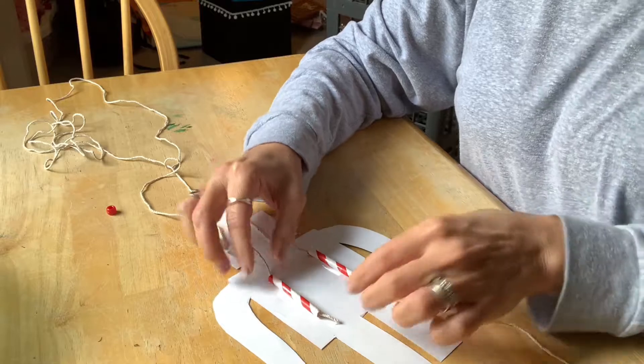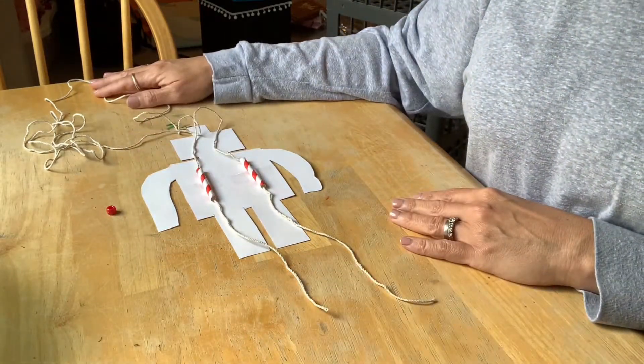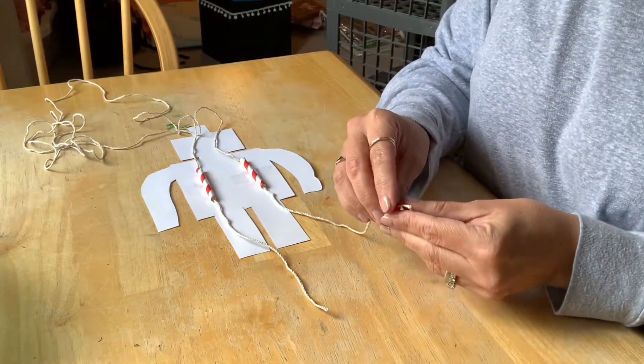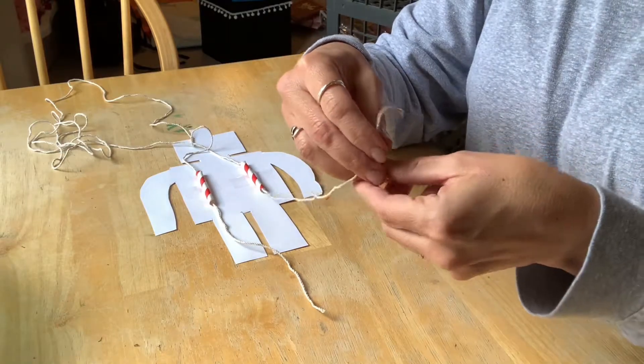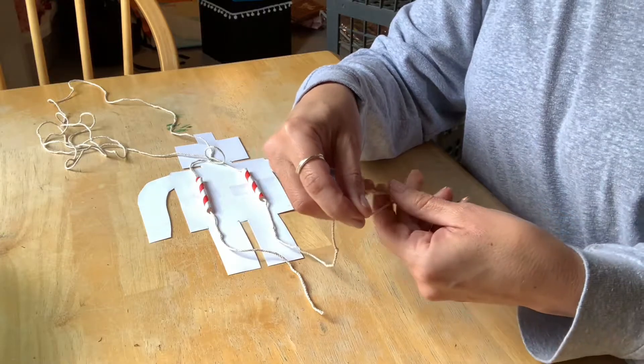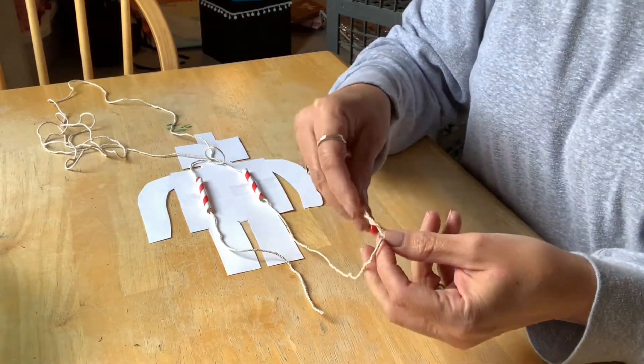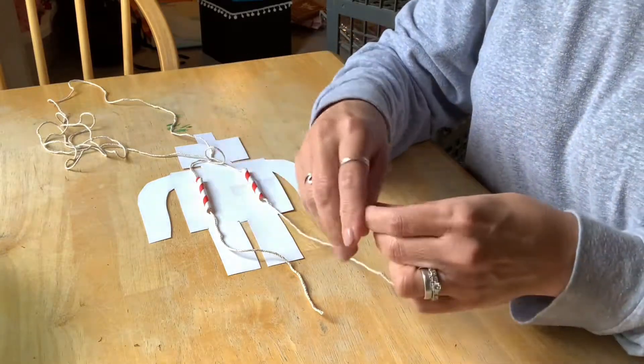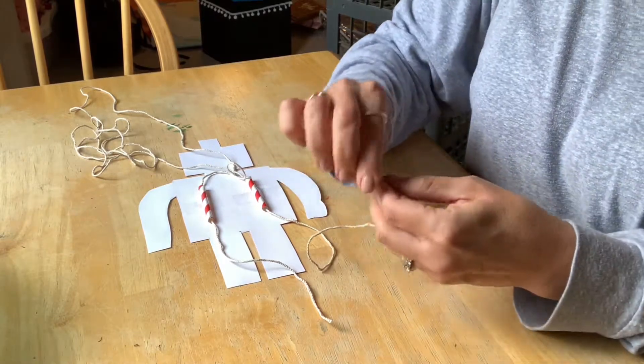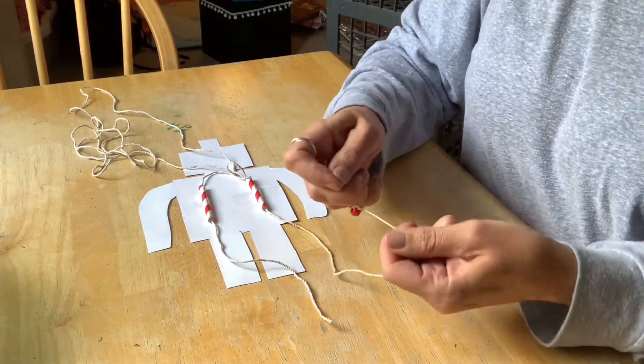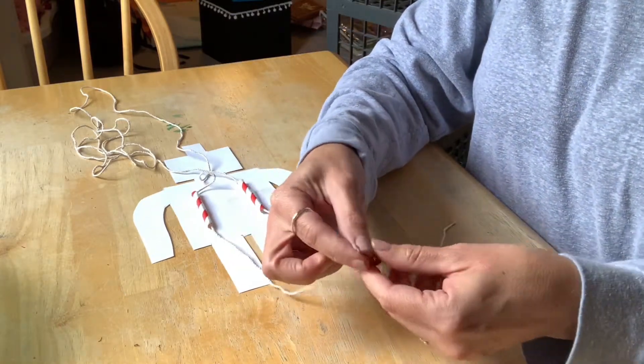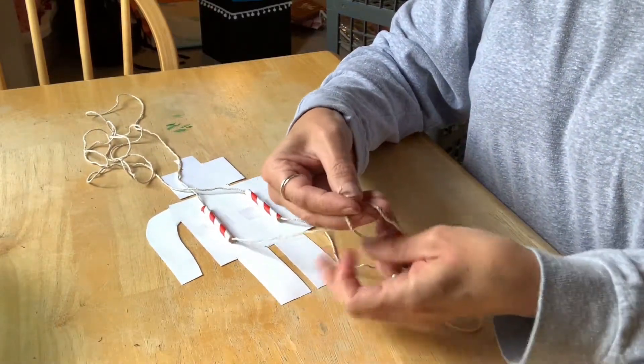We're going to do the beads now which are the stoppers. Make a little knot and make sure that you leave a little bit of string at the end because that's where you're going to pull and your robot will glide all the way to the top and then slide back down to the stopper. Sometimes I'll just go ahead and make a double knot just to make sure it's nice and tight.